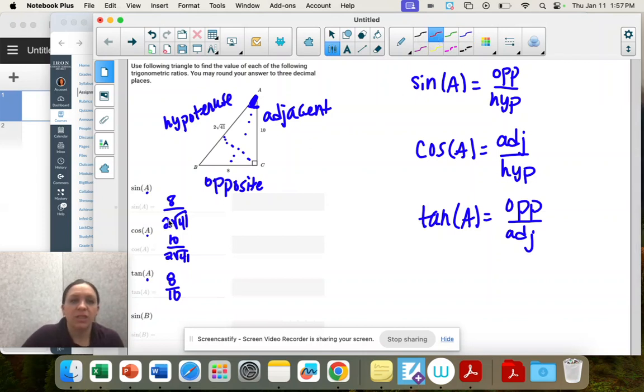And I'm going to reduce these. So eight over two is four. And then the square root of 41 is still there. 10 over two is five. And the square root of 41 is still there. And then these both divide by two. So we get four fifths.